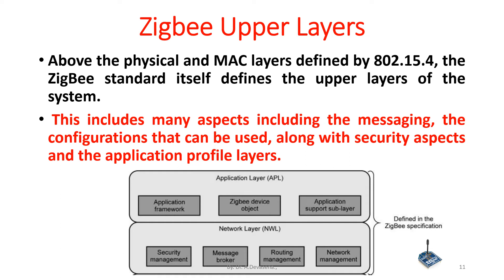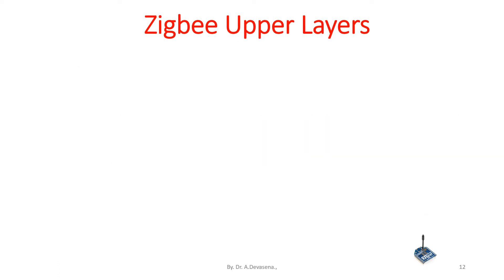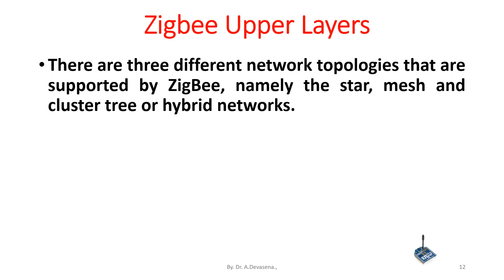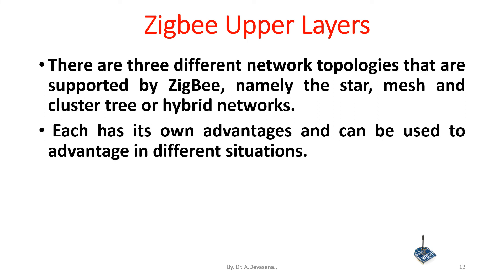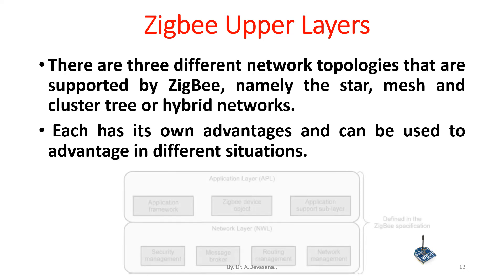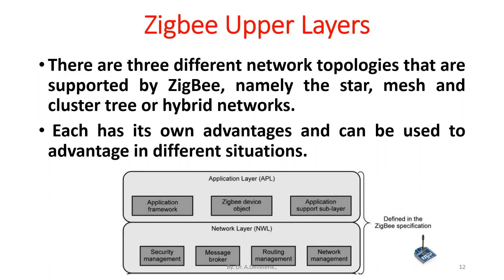The ZigBee upper layers are defined in the ZigBee specification itself. There are three different network topologies supported by ZigBee: star topology, mesh topology, and cluster tree or hybrid network topologies. Each has its own advantages and can be used in different situations. In the network layer, security management, message broker, routing management, and network management are defined. In the application layer, the application framework, ZigBee device object, and application support sublayer are defined.